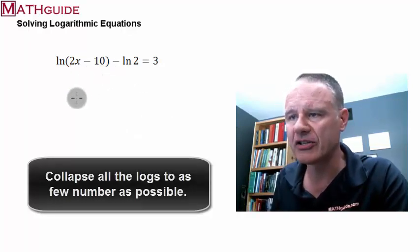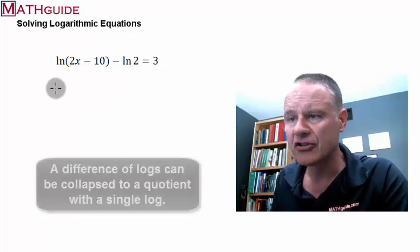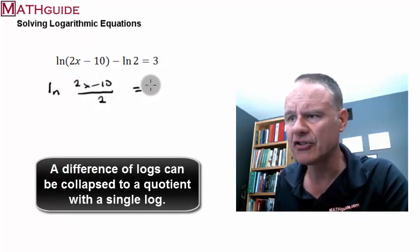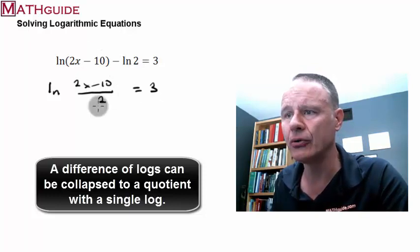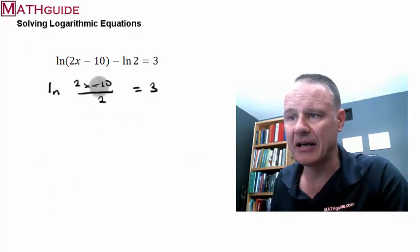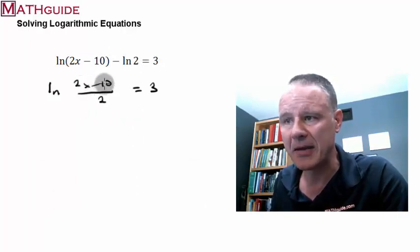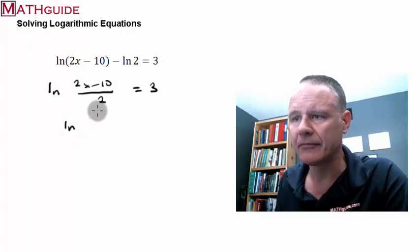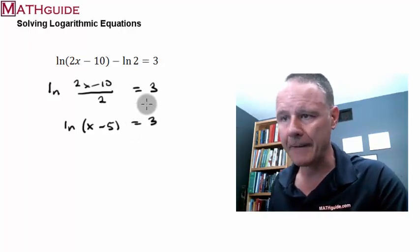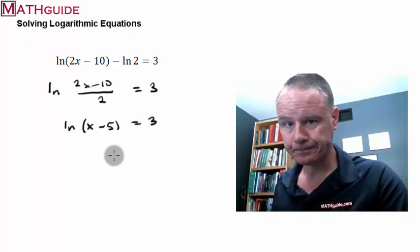Over here, I'm going to notice that I've got a subtraction of two logs. So, a subtraction of two logs can be collapsed into division. So, I'm going to make a quotient of 2x minus 10 and 2. So I've got a quotient. Well, I could reduce this. I could actually divide this entire expression, 2x minus 10 by 2. And if I did that, 2x divided by 2 is x, and negative 10 divided by 2 is negative 5. So that is now becoming a different-looking logarithm.